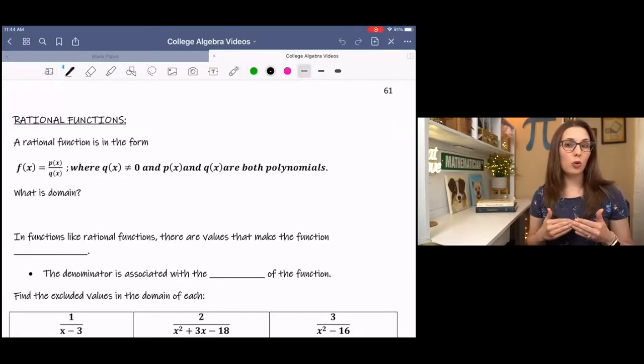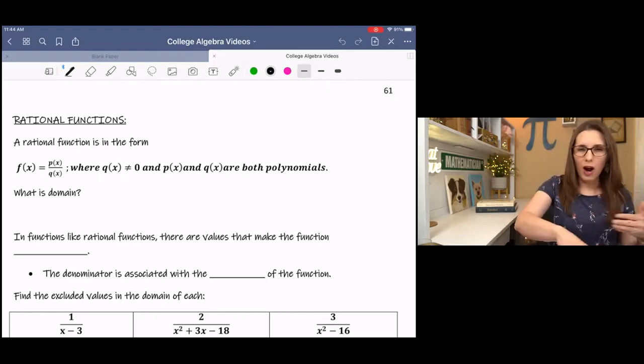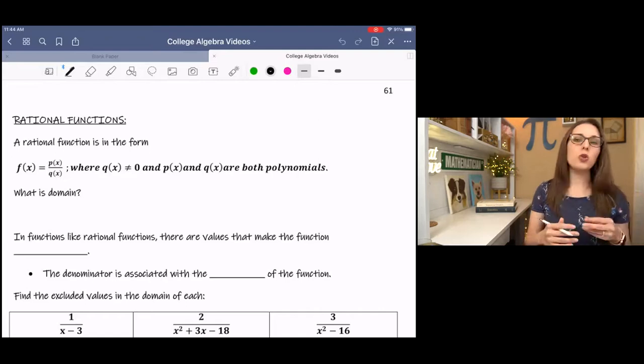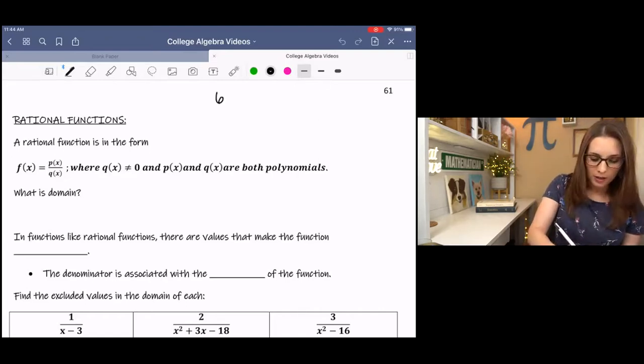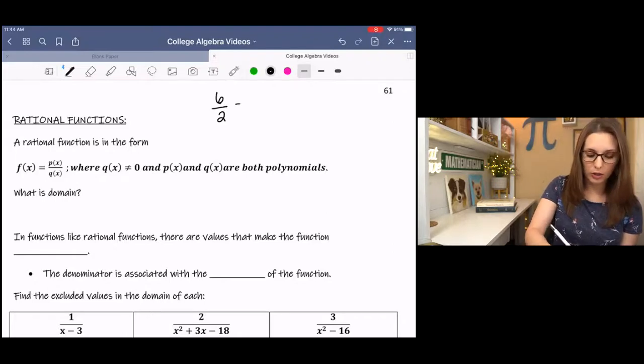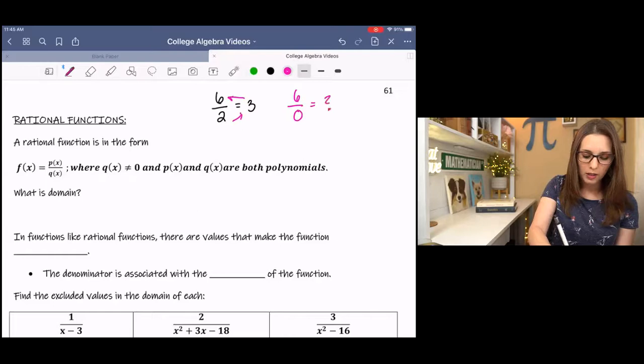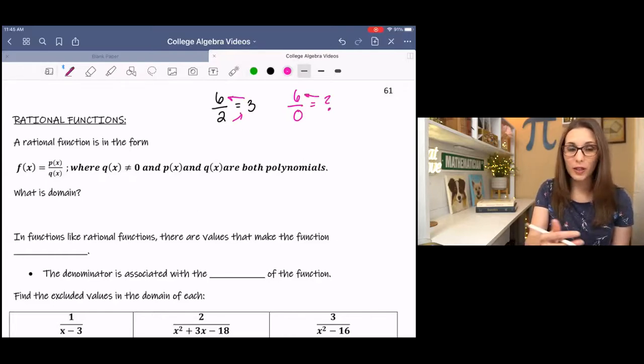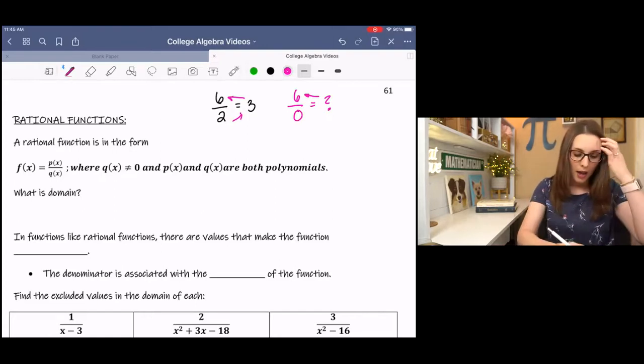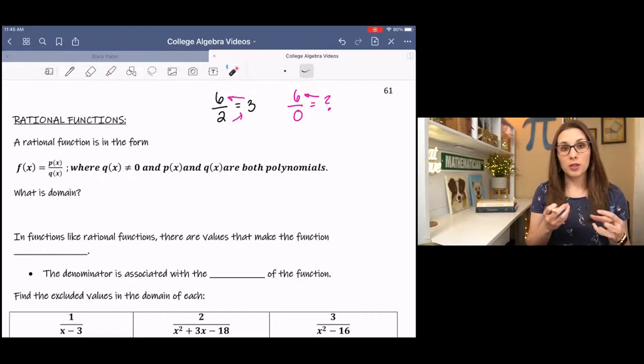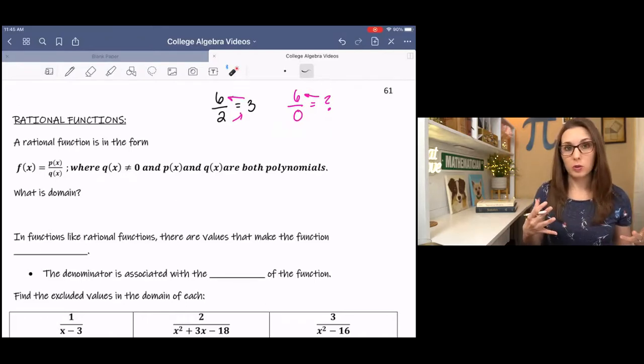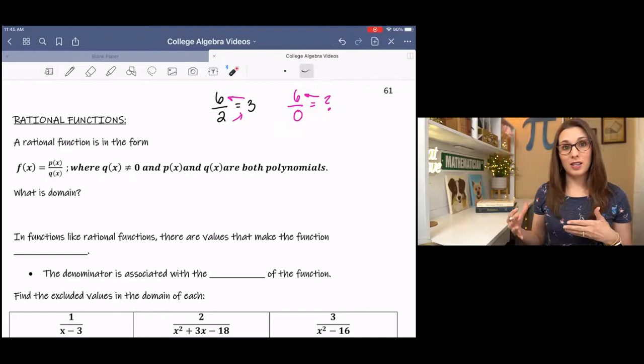So before I get into that, I want to explain why. Why can it not equal zero? If we go back to a basic example, 6 divided by 2, we know that 6 divided by 2 is 3 because 2 times 3 is 6. Now if I change the denominator to 0, 6 divided by 0, 0 times what is 6? Nothing. We can't find a value that makes this statement true. And so when 0 is in the denominator, we call it undefined. We cannot compute what this would be because there's not a unique value that exists for that statement.